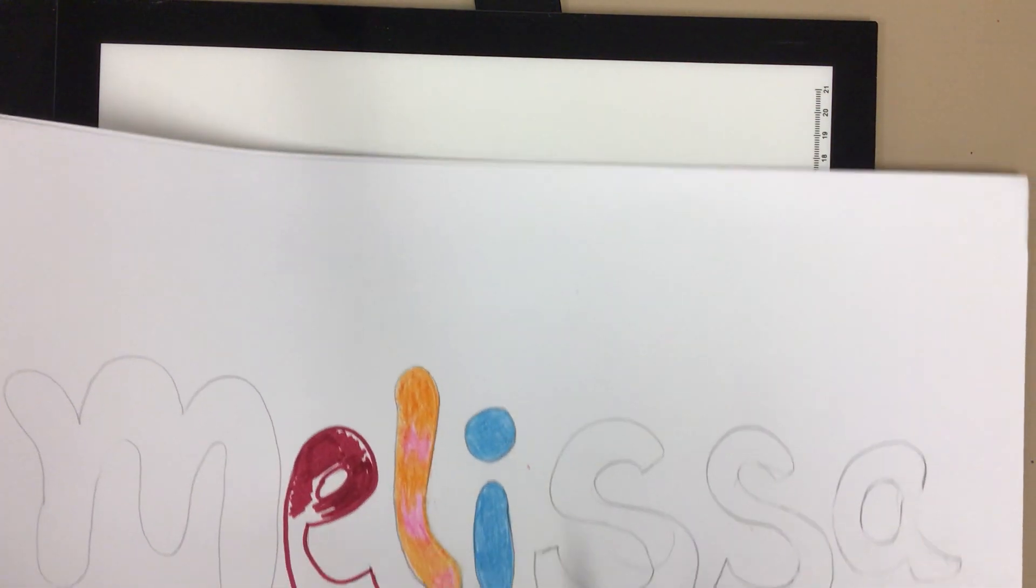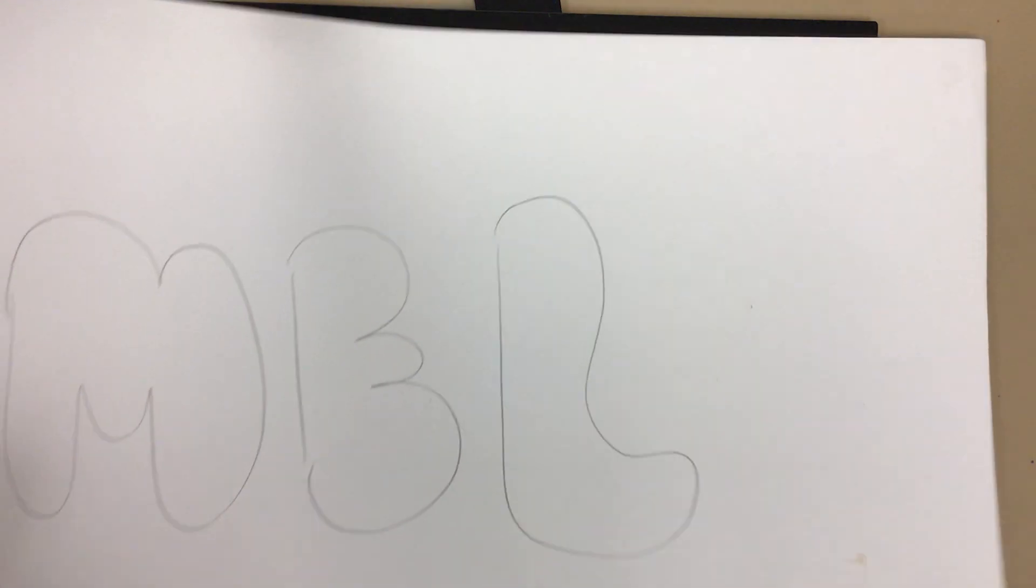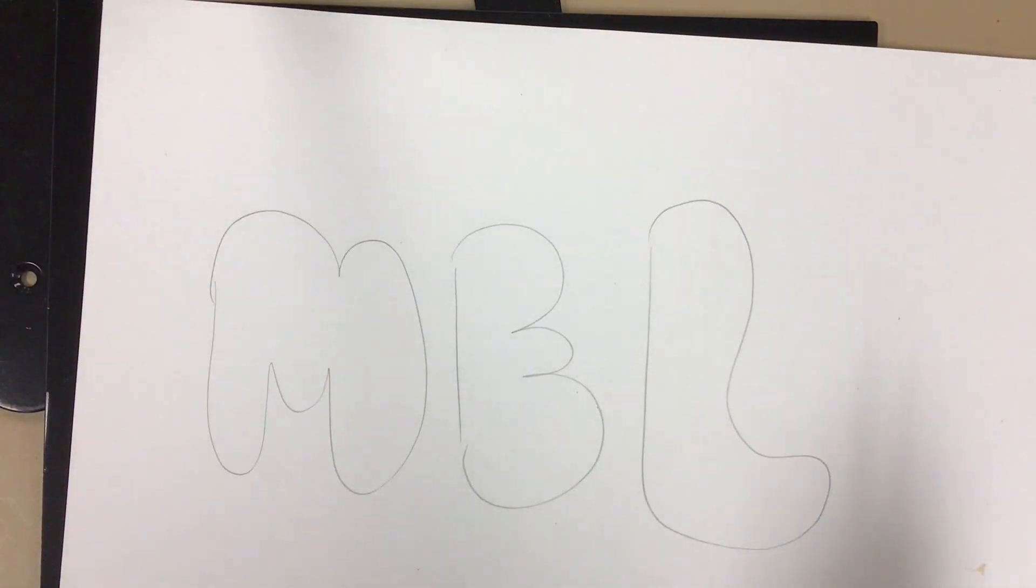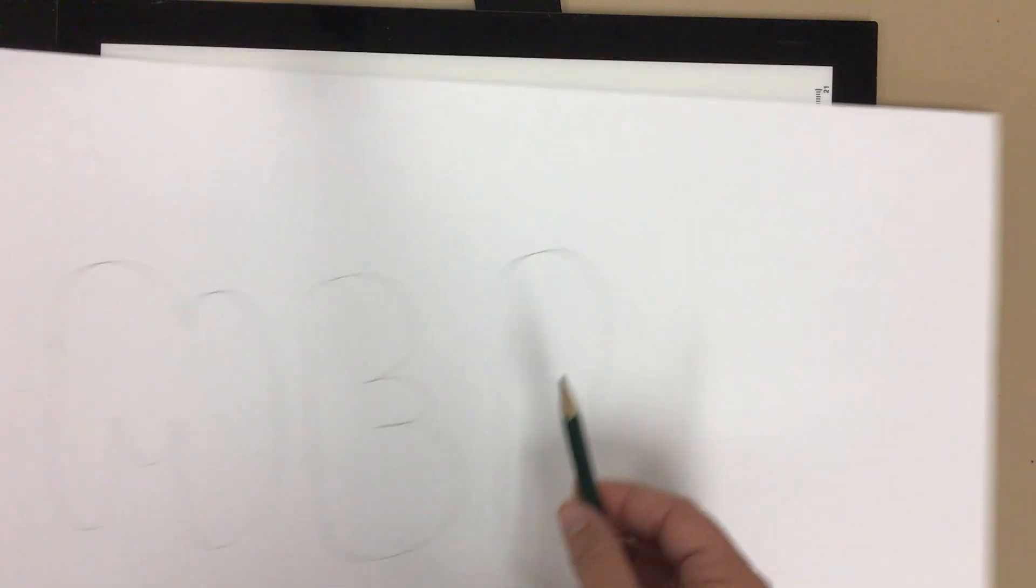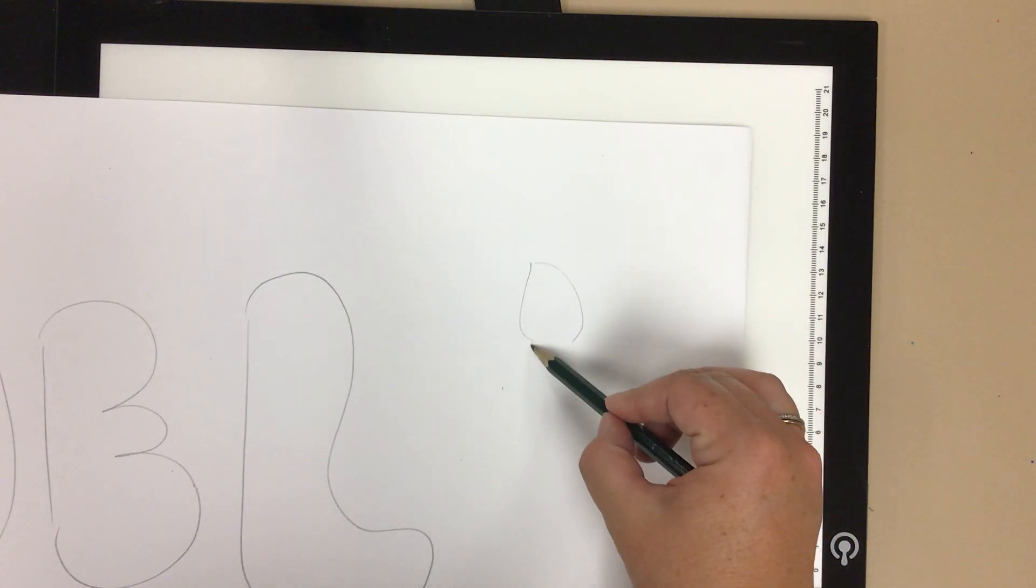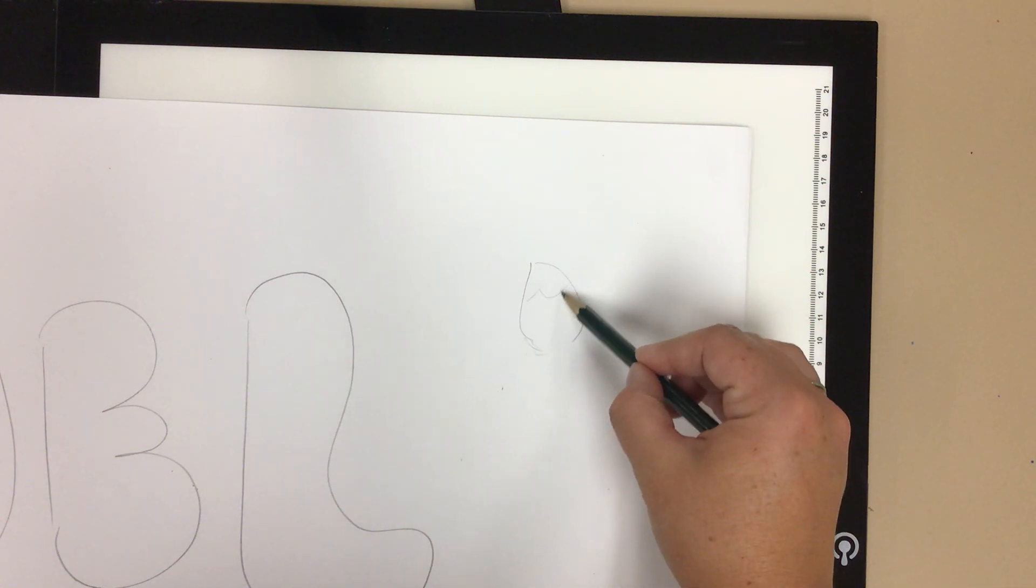Okay, decorate it with your name on the front and then on the back, you're going to put things that describe you. So I put my nickname and then I'm also going to put like a paintbrush. So I'm going to draw a paintbrush on here with some paint.